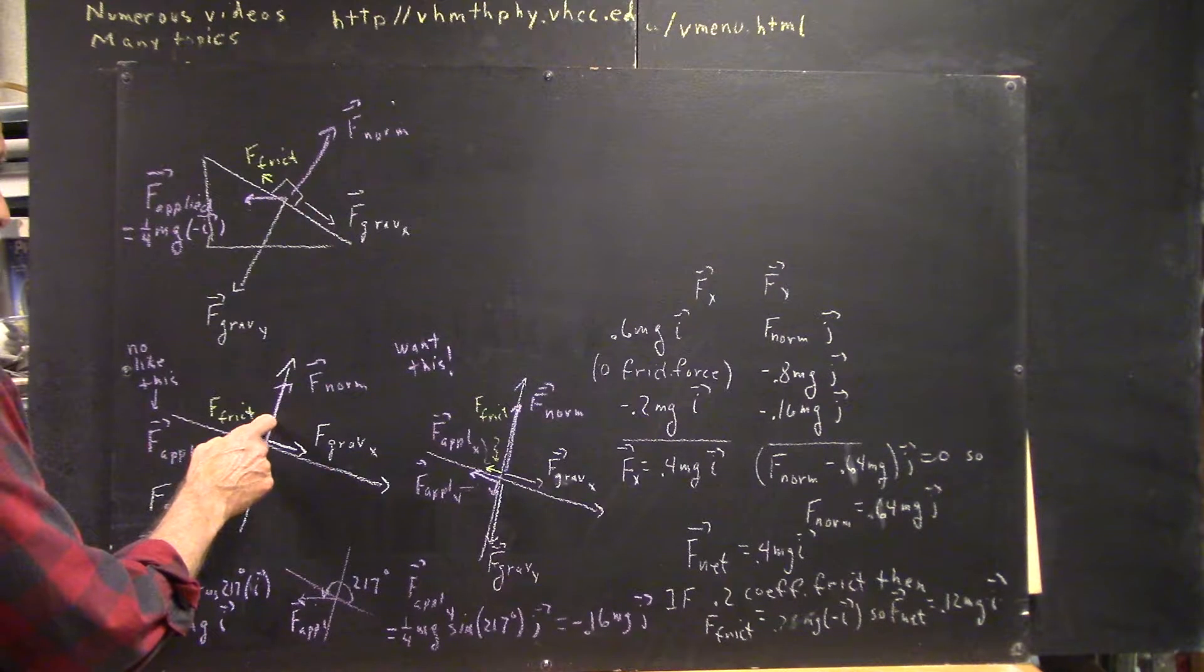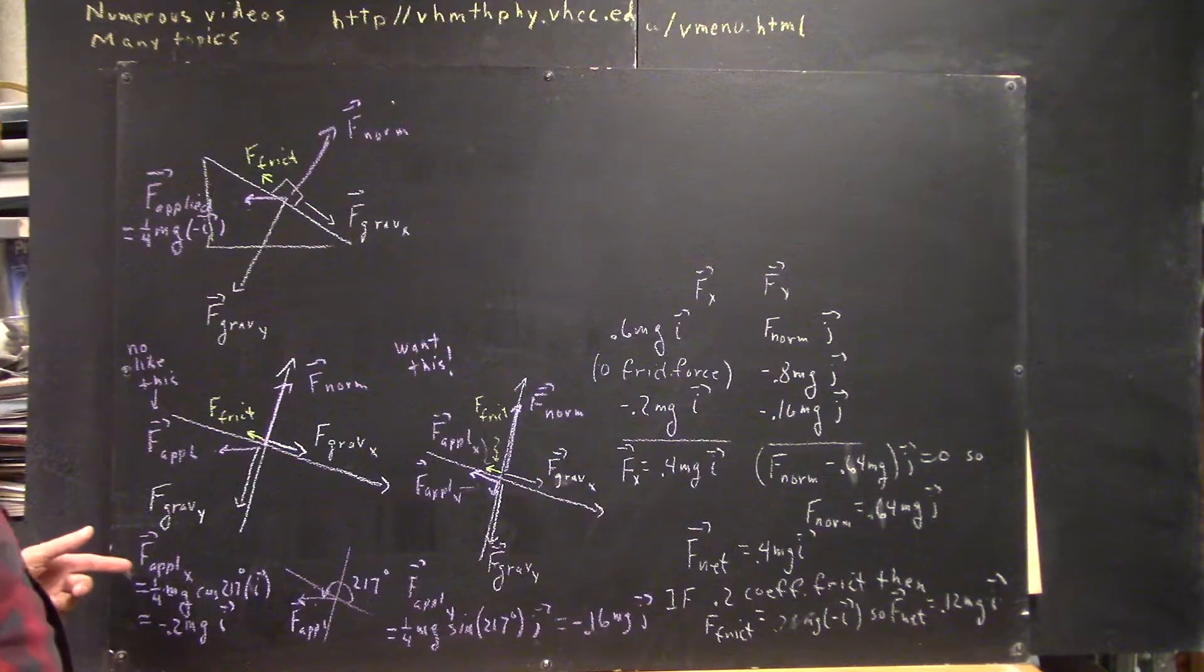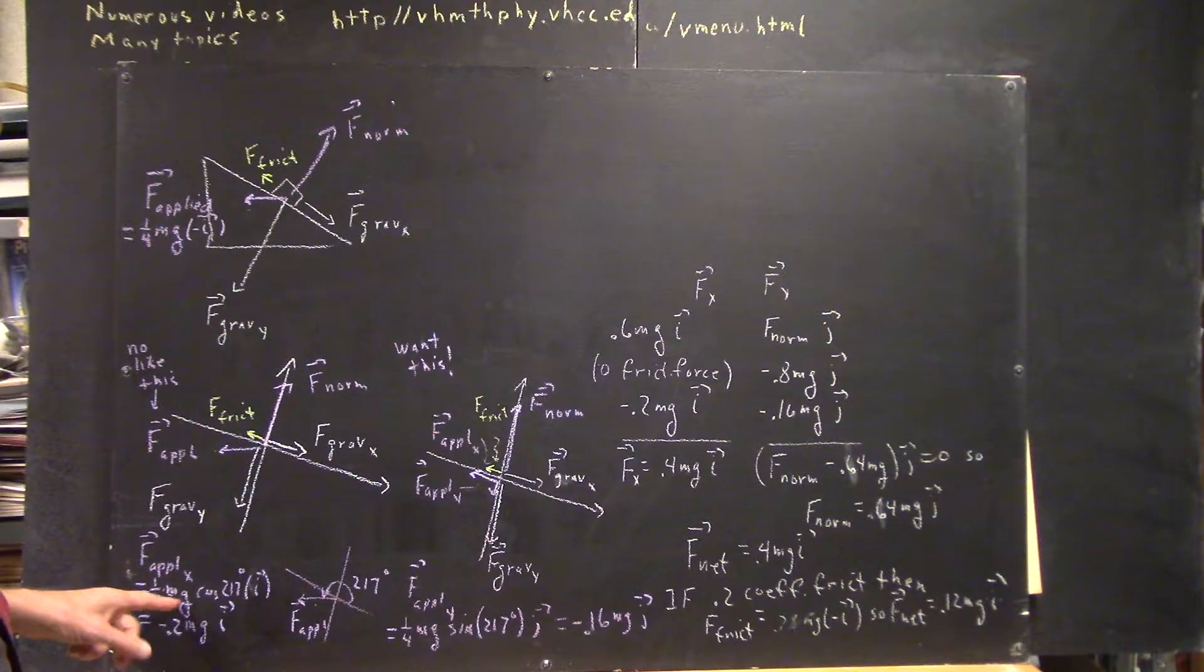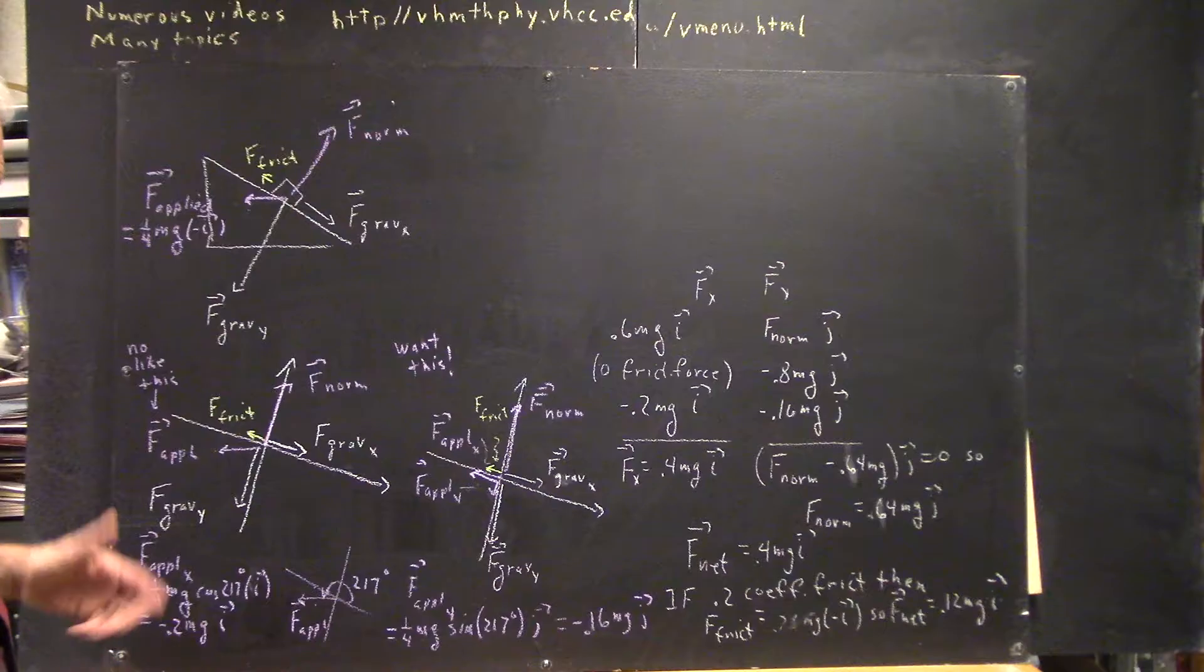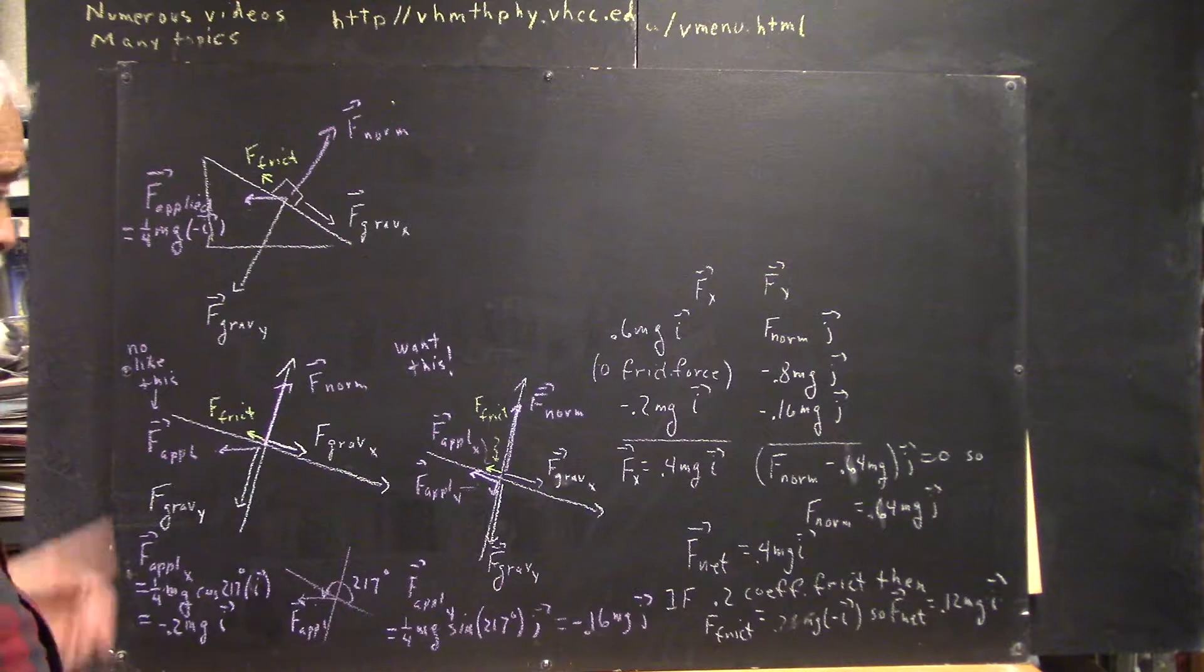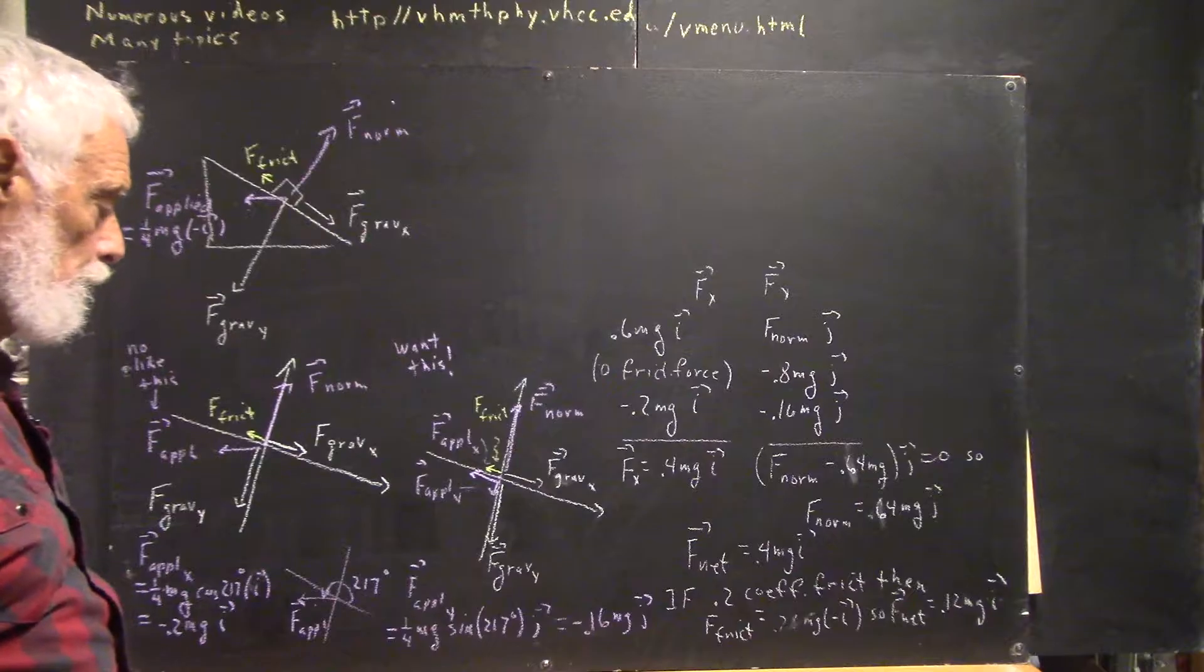From here to here is 90, 180, and then another 37 gives us 217. So the applied force in the x-direction is going to be one-quarter mg times the cosine of 217 degrees times i. And cosine of 217 degrees being negative 0.8, we get negative 0.2 mg times i. One-quarter of 0.8 is 0.2, or one-fifth if you wish. One-quarter of four-fifths, any way you want to look at that.